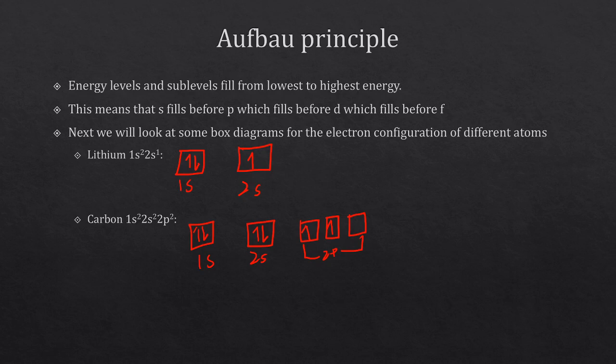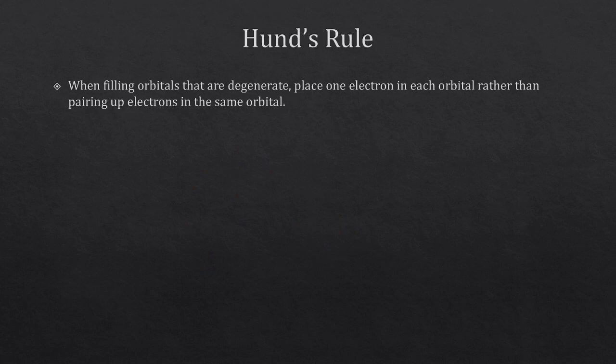Now we might ask ourselves: why did I put two up rather than pair them together? To answer this we need another rule. I'm not concerned with the names of these rules — I'm focused on whether you can use them appropriately. This next rule is Hund's rule: when filling orbitals that are degenerate, meaning they have the same energy level, you place one electron in each orbital rather than pairing up electrons in the same orbital.